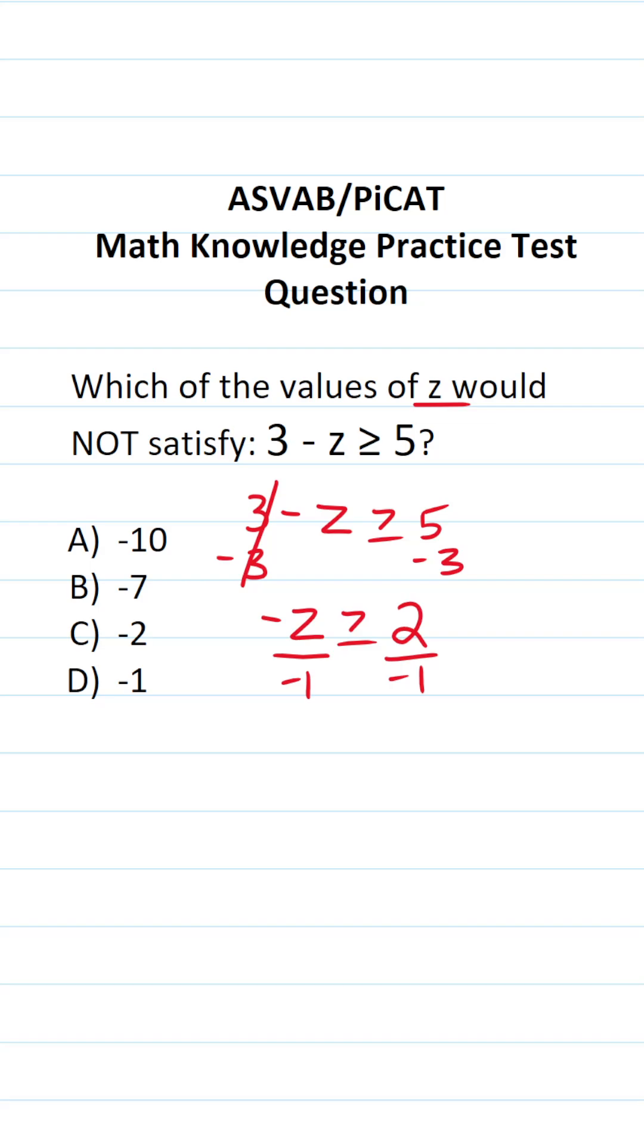Now, whenever you multiply or divide across an inequality sign by a negative value, in this case I divided both sides of the inequality by negative 1, that's going to prompt you to change the direction of the inequality sign. So I'm going to go ahead and do that.